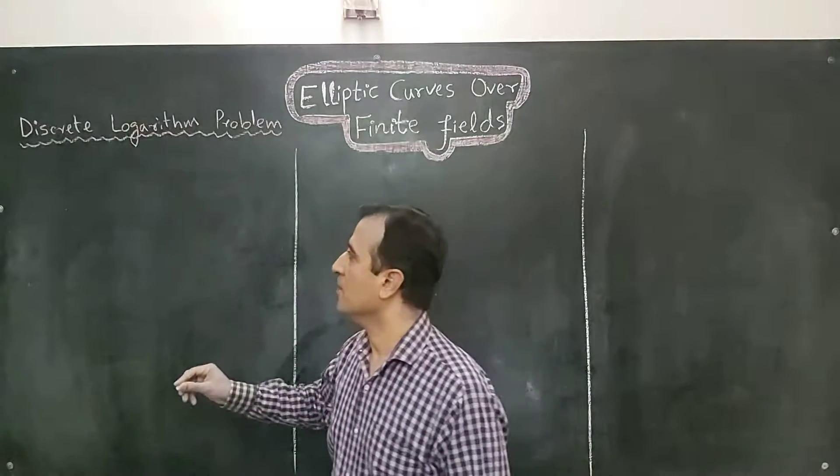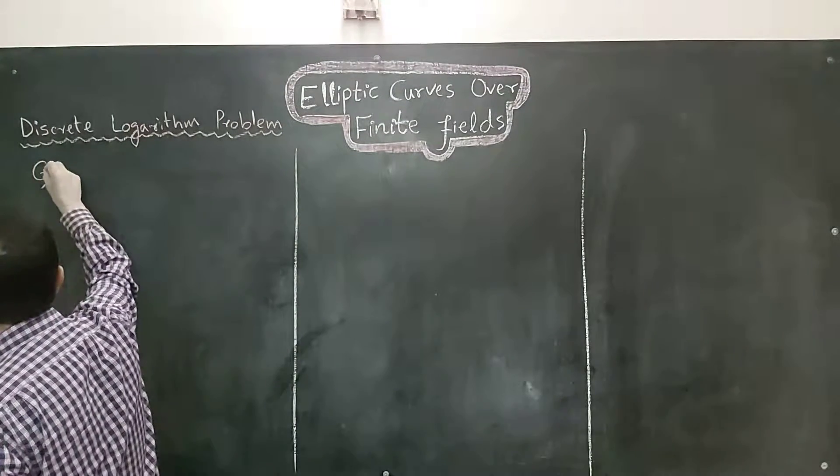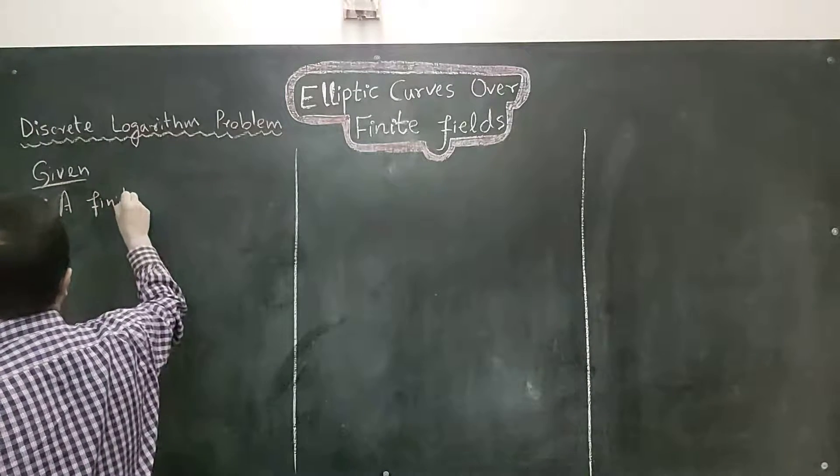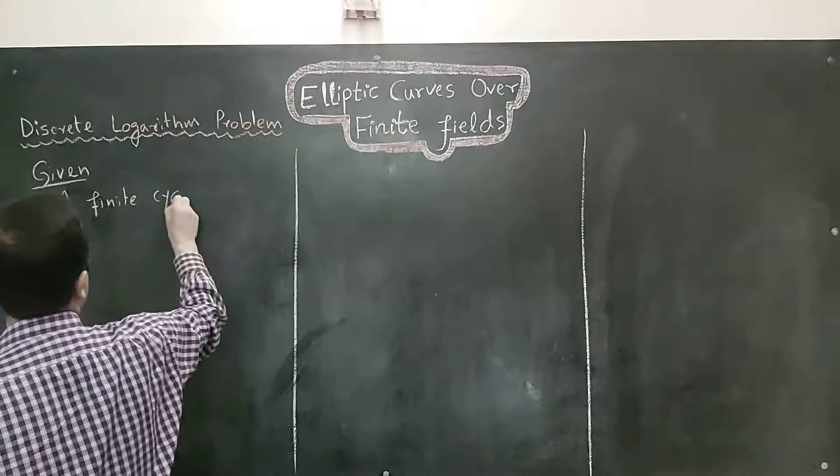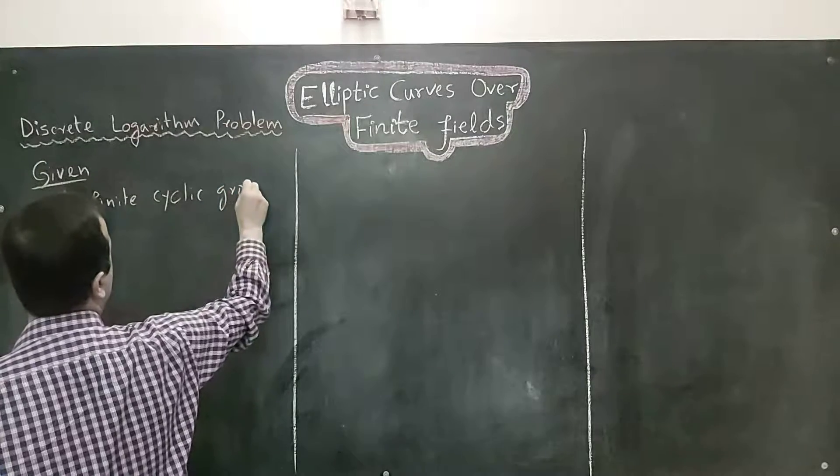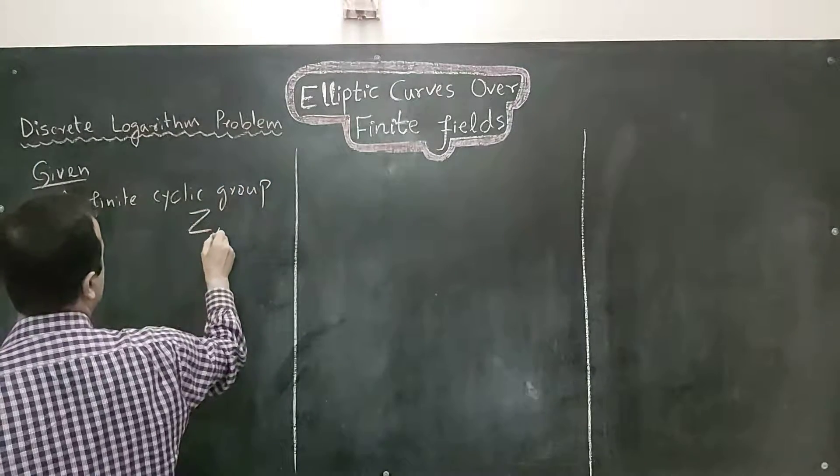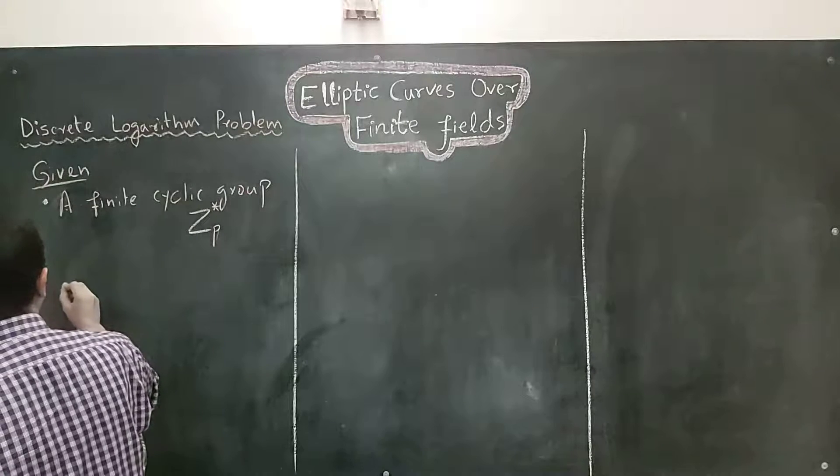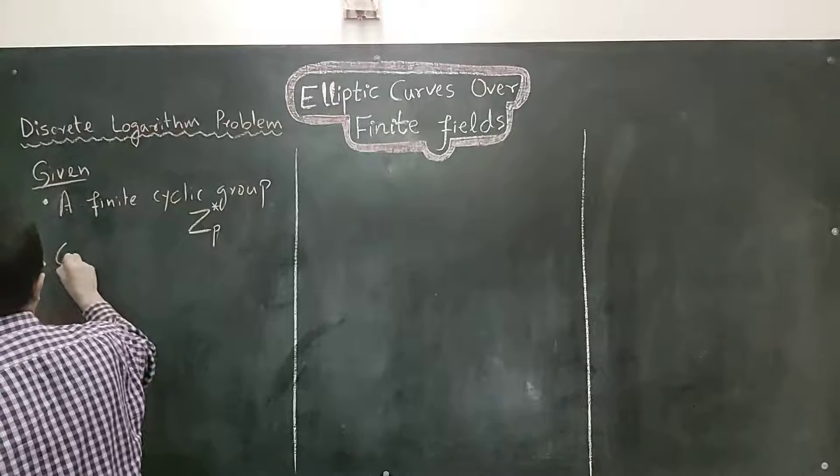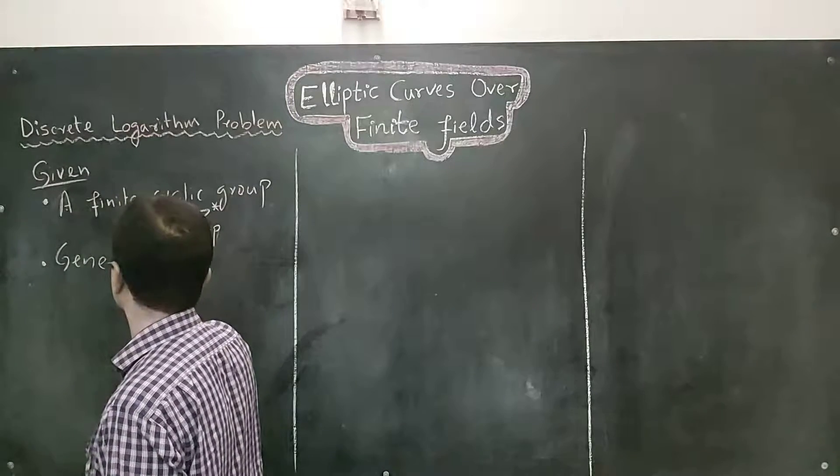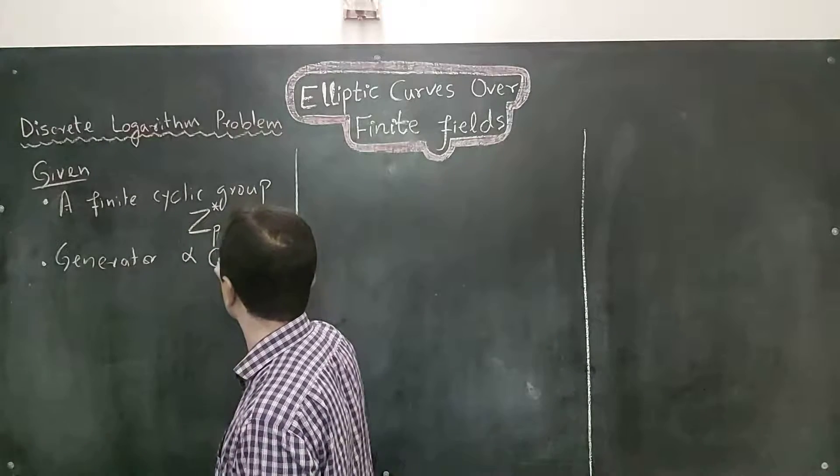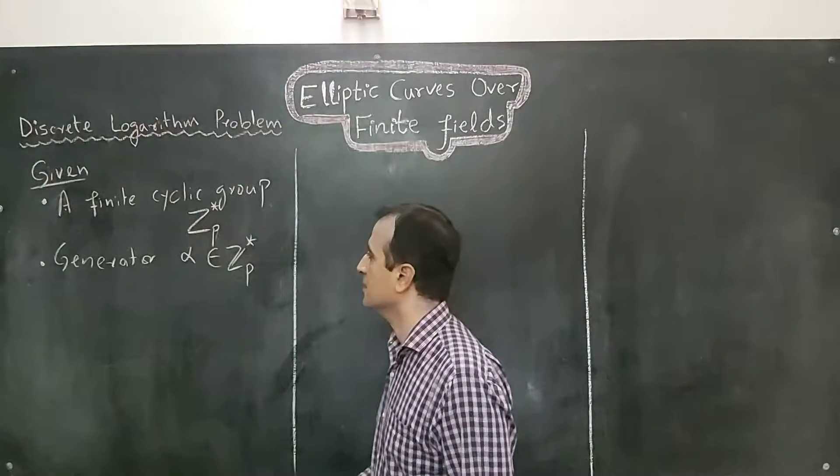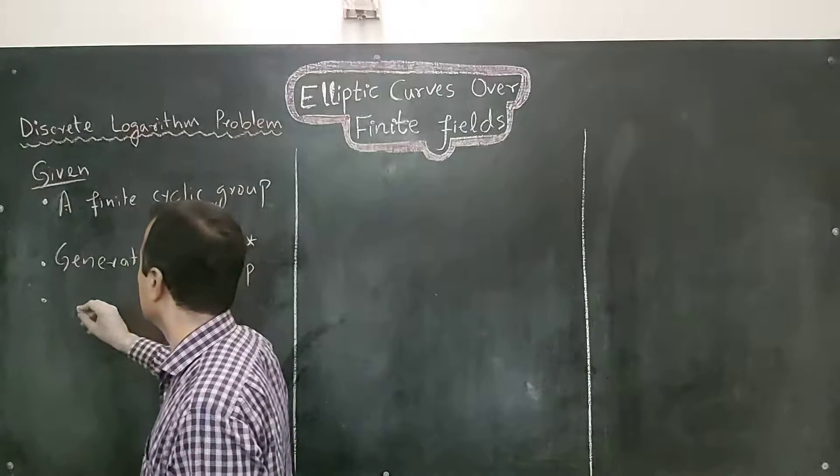In discrete logarithm problem, we are given a finite cyclic multiplicative group and we are given generator of that group, say generator is alpha. Generator is also known as primitive element. And we are given another element, beta.